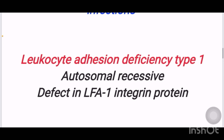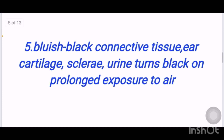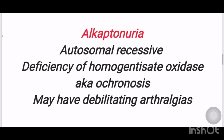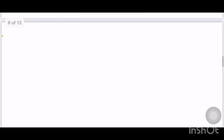Next scenario: bluish-black connective tissue, ear cartilage, sclera, and urine turns black on prolonged exposure to air. The diagnosis is alkaptonuria. It is an autosomal recessive deficiency of homogentisate oxidase. It is also known as ochronosis and may have debilitating arthralgias.